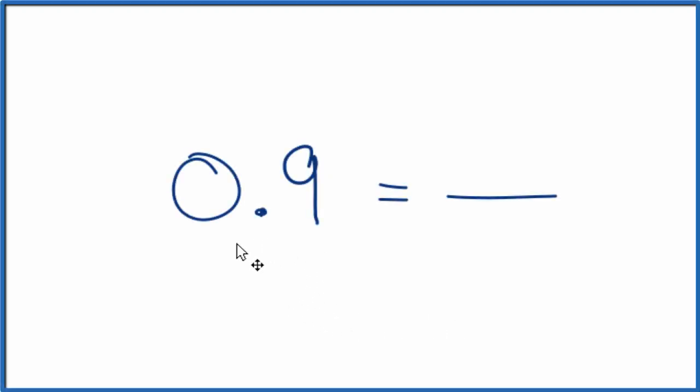So how do we express the decimal 0.9 as a fraction, like numerator over denominator?